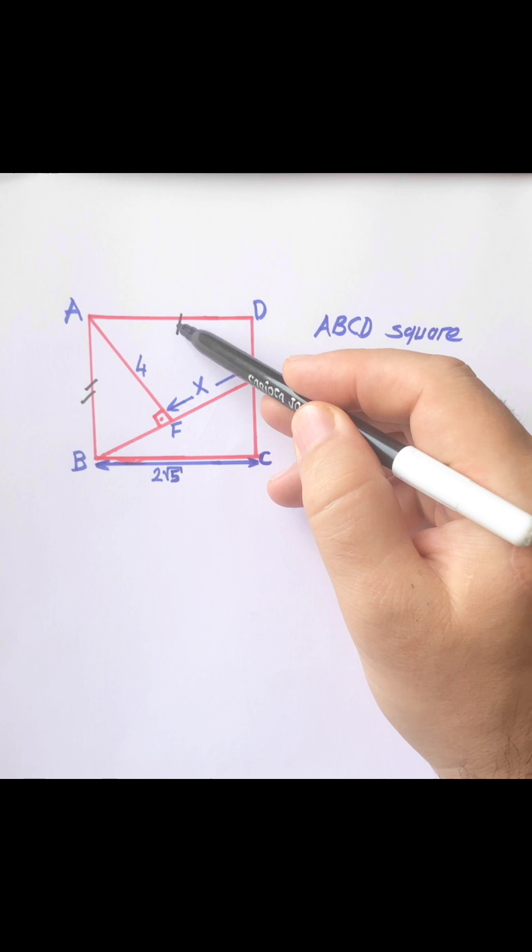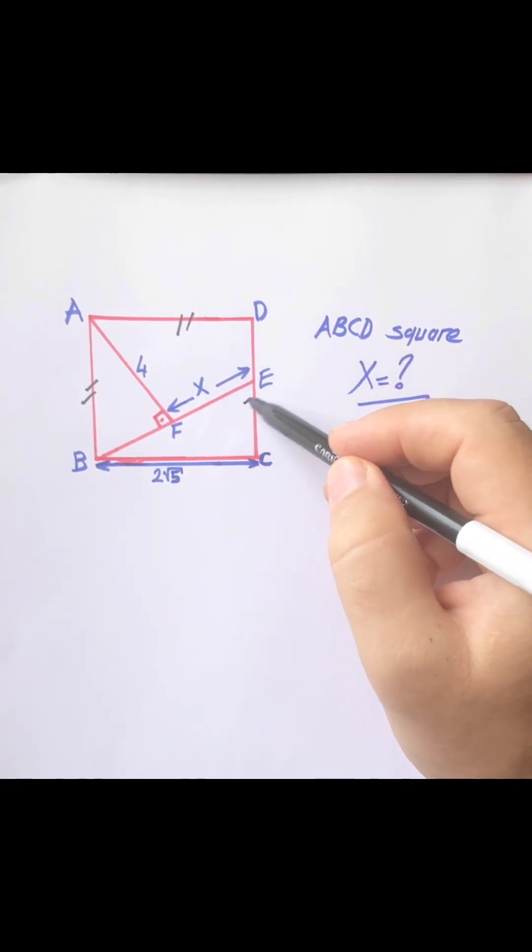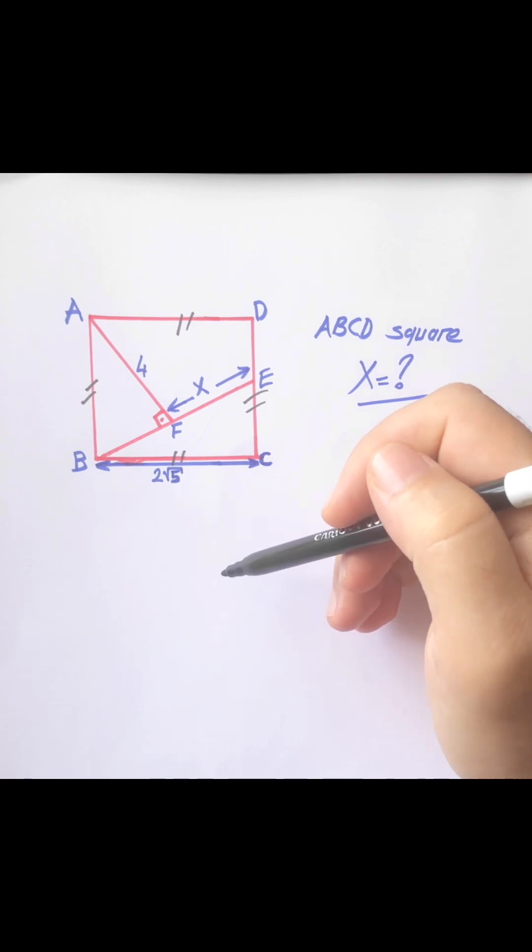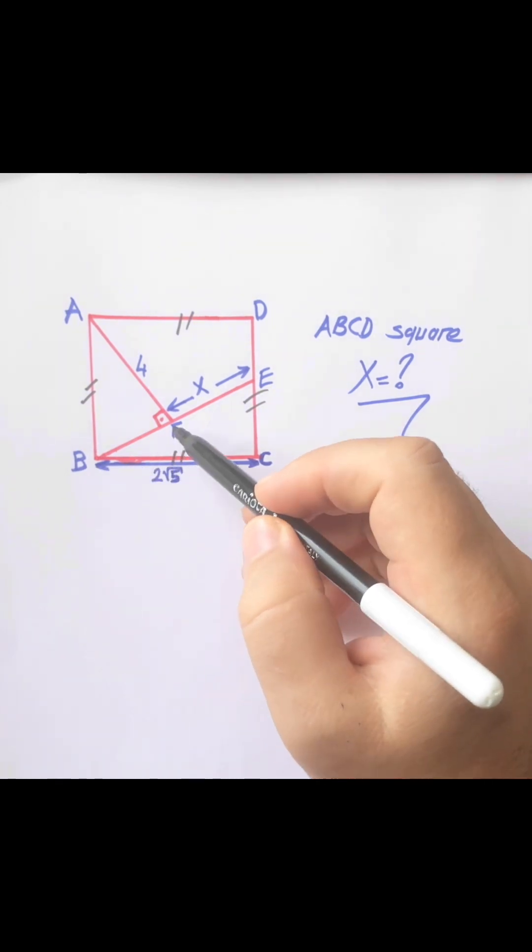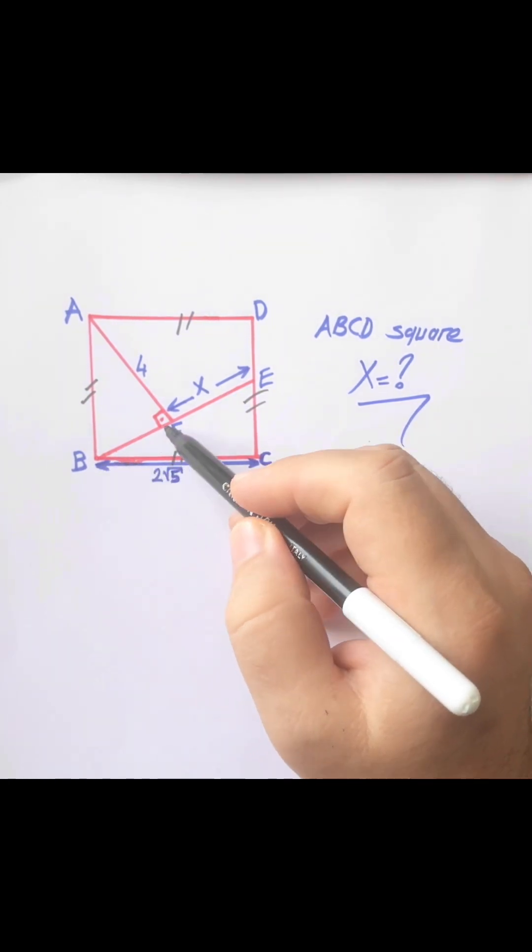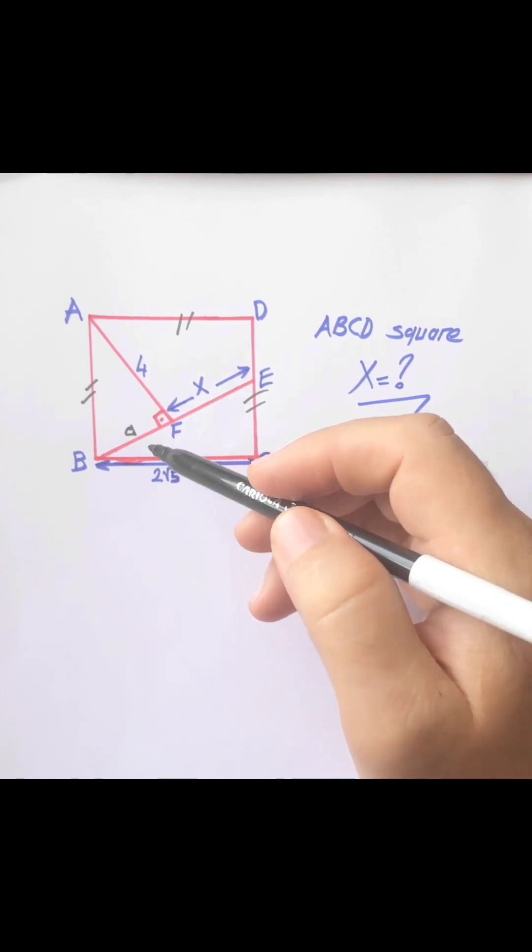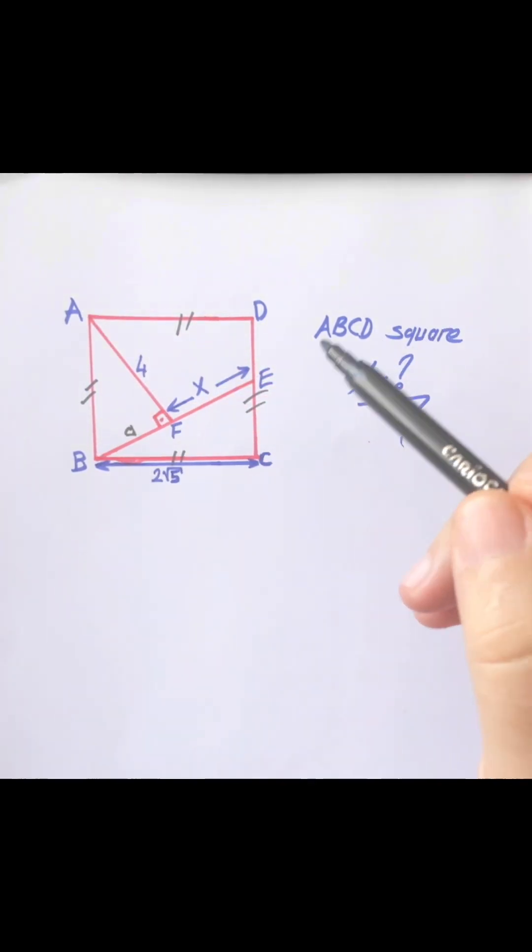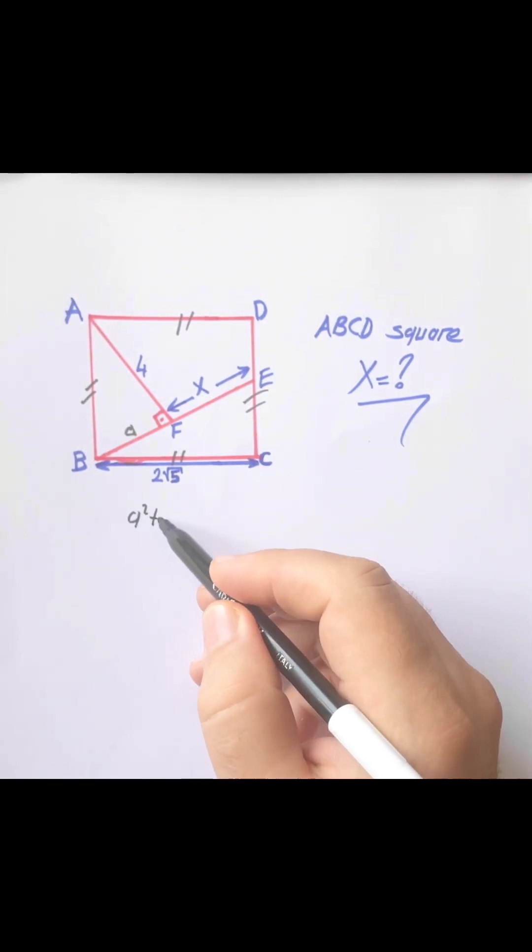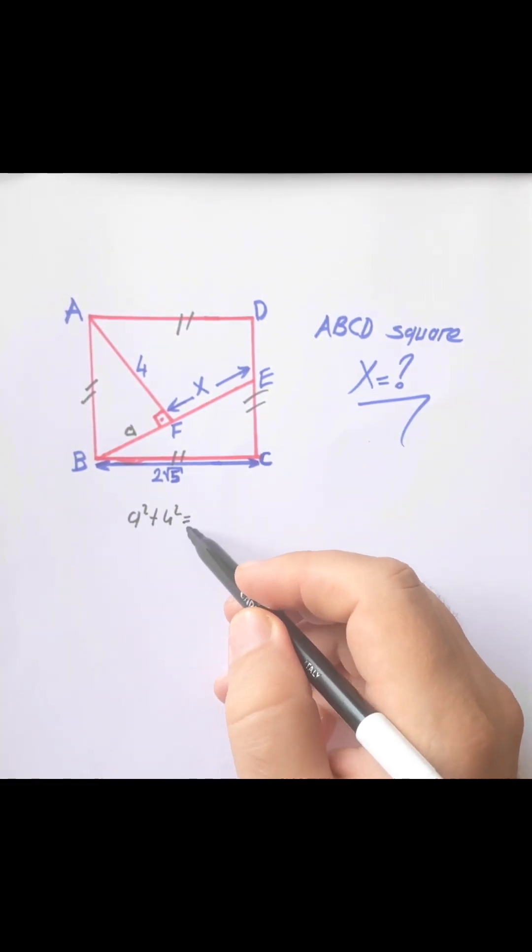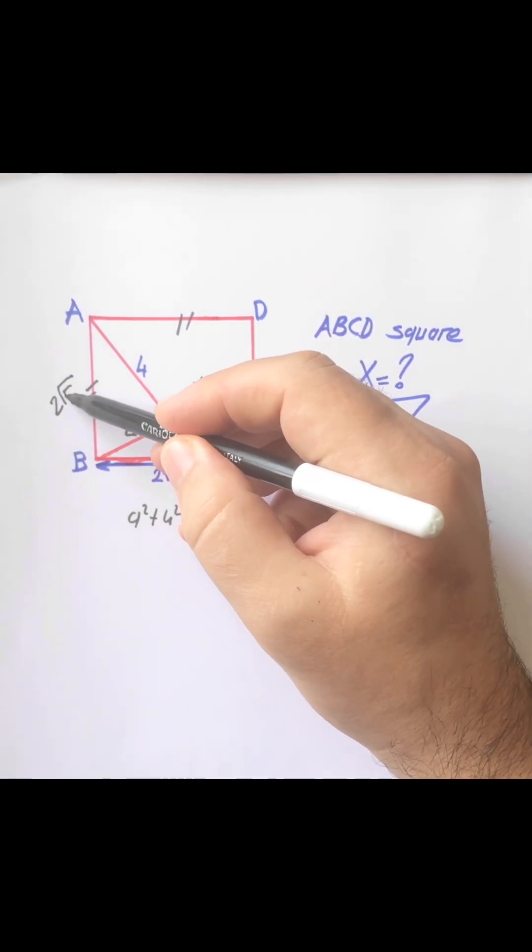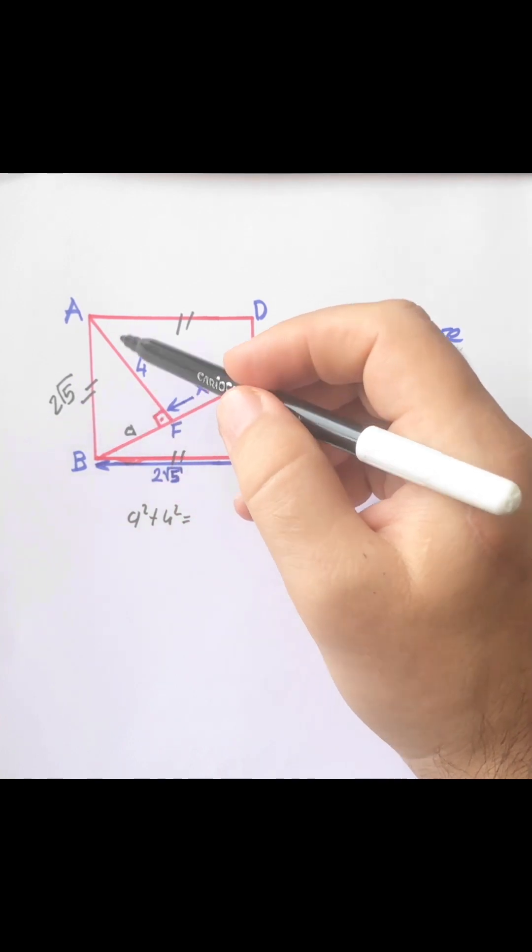Let's call the length BF as 'a' units. We apply the Pythagorean theorem in triangle ABF: a² + 4² = AB². Since AB equals 2√5 (the equal sides of the square), we have a² + 16 = 20.